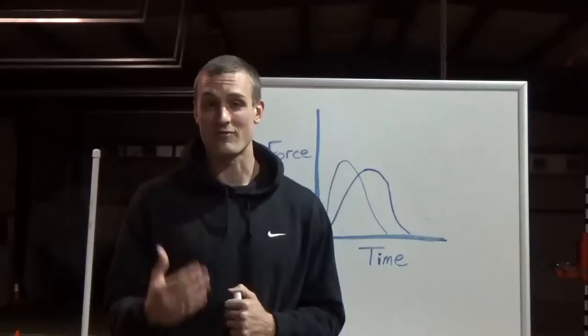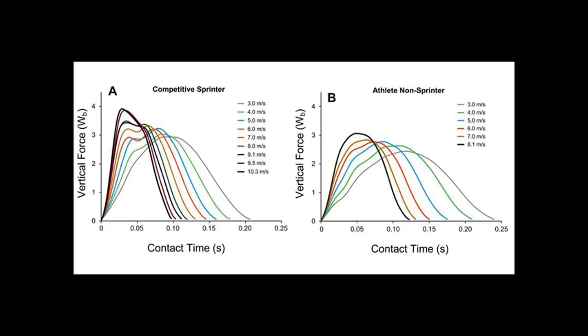What the researchers did is measure vertical force during running at different speeds. They had a sprinter group and an athlete non-sprinter group. Now, one of the researchers, Dr. Peter Weyand, he has already explored this vertical force concept and determined that top speed is determined by vertical force. So in this study, they were actually looking beyond just the magnitude of the vertical force and examining the pattern of that force, the shape of the force curve.